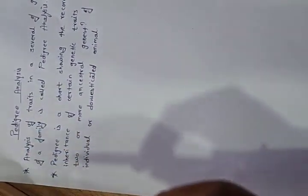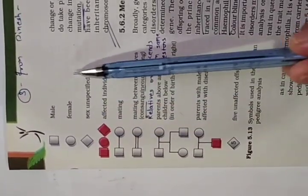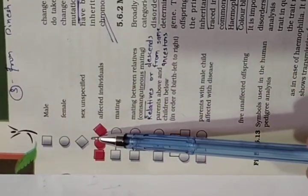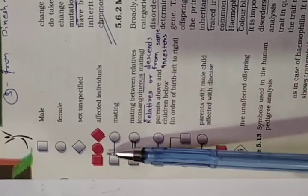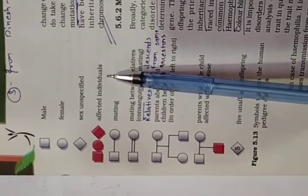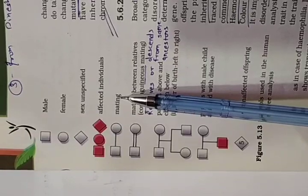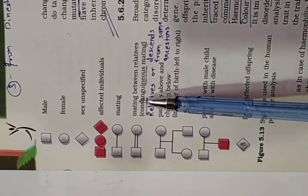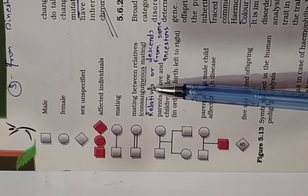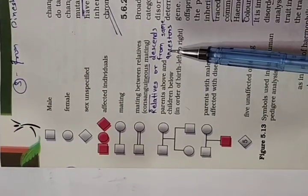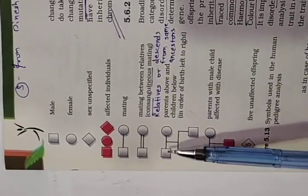There are certain symbols used in pedigree analysis. A square denotes male, a circle denotes female, and a diamond-shaped symbol denotes unspecified sex. Darkly shaded symbols represent affected individuals. A horizontal line between male and female denotes mating or marriage. Two lines between them indicate mating between relatives, also known as consanguineous mating — marriage between relatives descended from the same ancestors.